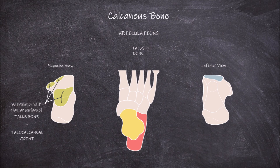The second articulation is with the cuboid bone. The facet on the anterior surface of the calcaneus articulates with the facet on the posterior surface of the cuboid bone. This articulation forms the calcaneo-cuboid joint.